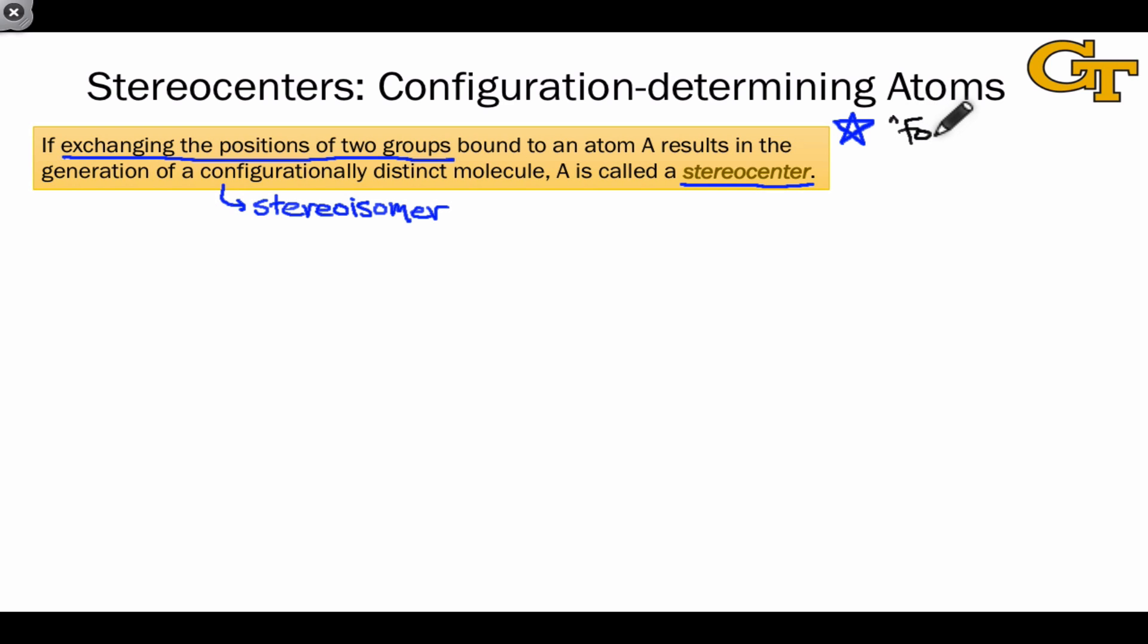Phrases like four different groups bound to carbon can be ambiguous to apply, kind of in the same vein as the plane of symmetry method in identifying chirality. These descriptors of stereocenters can be a little bit unreliable.